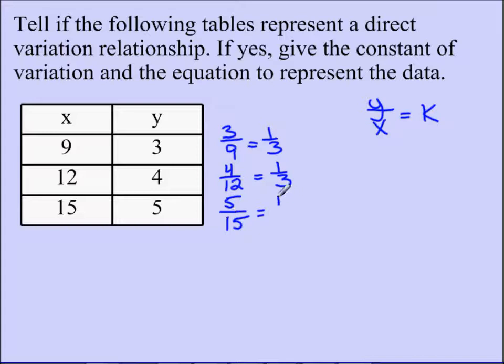Since all these values are the same, I do have a direct variation relationship. And therefore, I can find my constant of variation, which is my k value. So in this case, k equals 1 third.